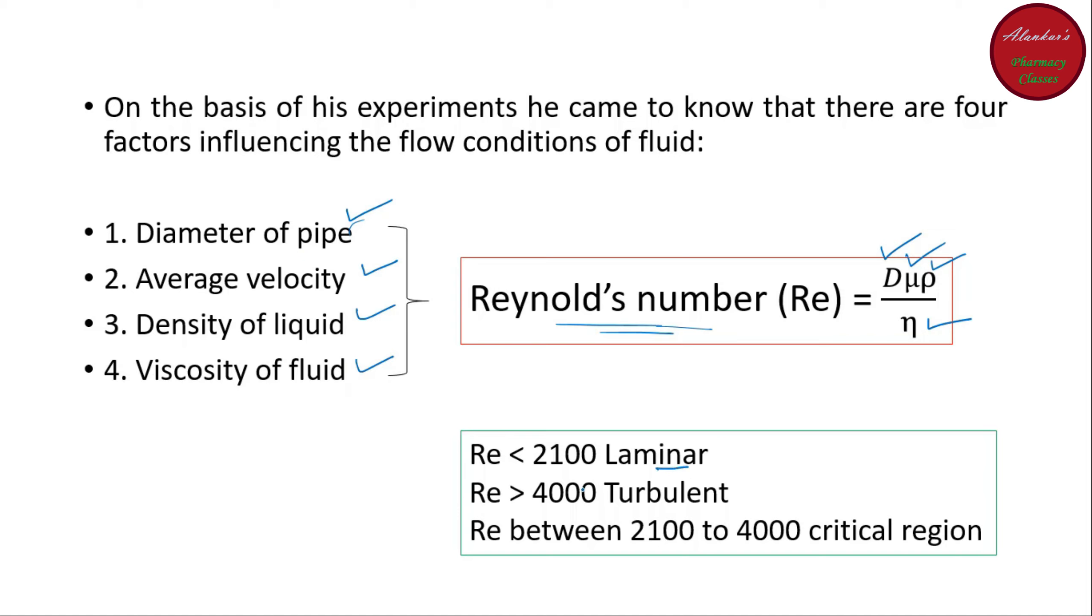As we know that if the Reynolds number is less than 2100, the flow will be laminar. If it is greater than 4000, then it is turbulent. And if it is between 2100 to 4000, it is in the critical region. Or we also called it as transitional phase.